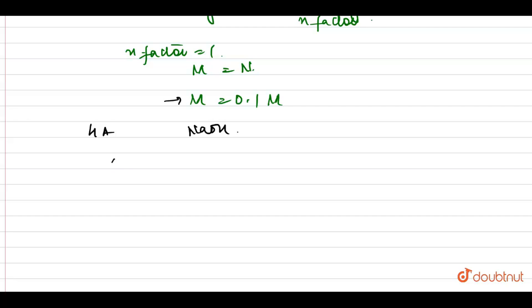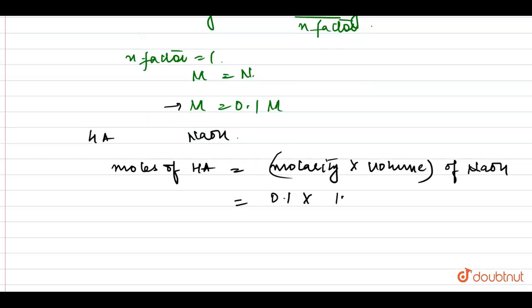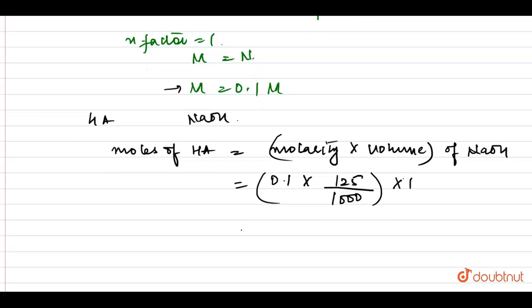Moles of HA will be equal to molarity into volume of NaOH. So, molarity is 0.1 into volume in liters, which is 125 divided by 1000. This gives 125 into 10 to the power minus 4 moles.